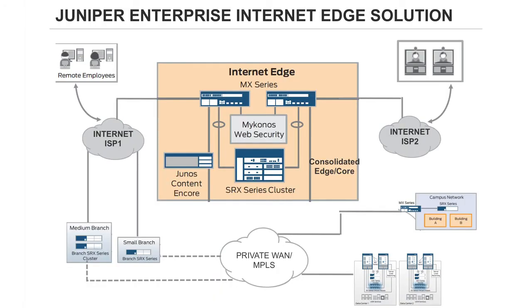The Internet edge router functions as the border or gateway device separating the WAN core from the Internet. It peers with the ISPs and controls traffic between the Internet and the WAN core. Remote users, partners, and employees can initiate connectivity to the data center, branches, or campuses, and the Enterprise WAN through this Internet edge, which acts as the first layer of defense that protects the WAN core from security attacks originating from the Internet. The core infrastructure can also be protected by additional layers of security. Security can be provided both at application and network infrastructure levels using a combination of techniques such as policies, filtering, zoning, or network address translation, or NAT.